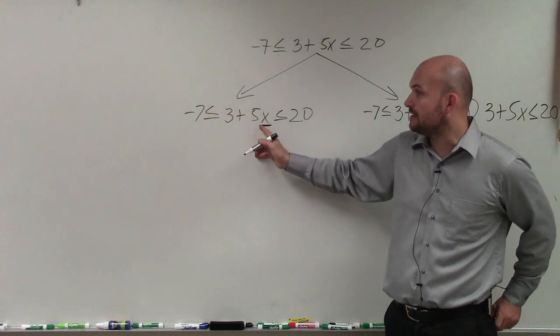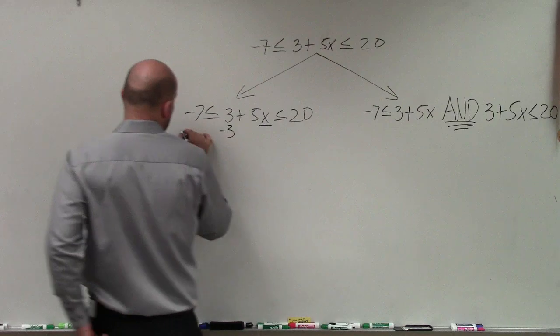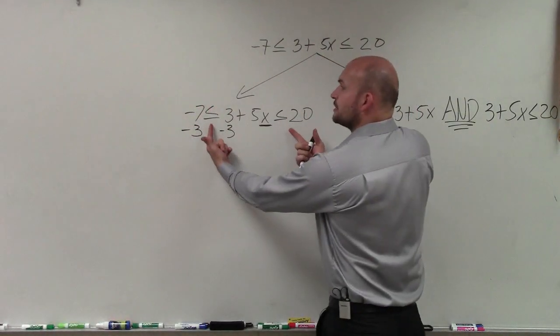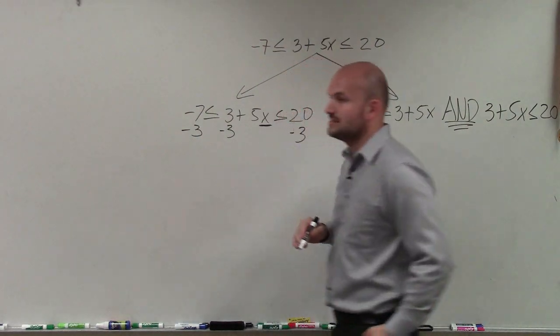My x is being added by 3 and being multiplied by 5. So the first thing you want to do is undo adding 3. Unlike an equation, though, that has one equal sign, this compound inequality has two inequality signs. So I've got to make sure I subtract on both ends.